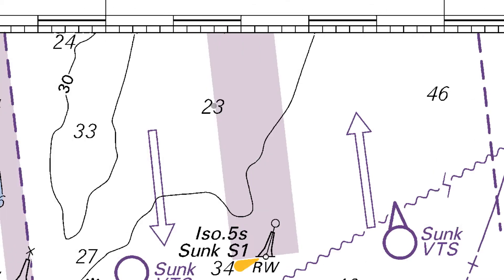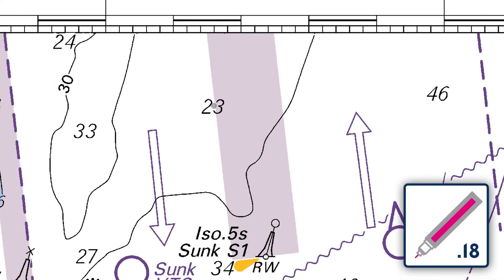Using a magenta 0.18 pen, draw a small circle on the marked spot. Complete the deletion with double strikethroughs over the existing depth surrounding the small circle.